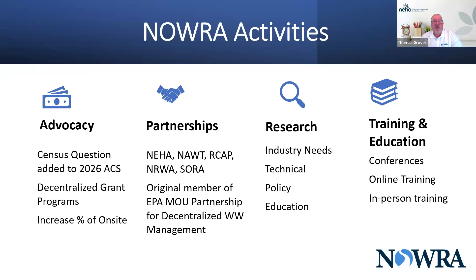Our partnerships — NEHA is one of our key partners. Our EPA-MOU partnership has about 25 or so member organizations. NEHA and NAWRA were among the original members of that partnership back in the early 2000s. We are working on research — we conducted a survey in 2021 with Baylor University on industry needs. We're finalizing that document to help identify where we have needs in policy, technical education, and align that with potential funding. And lastly, training and education is one of our biggest umbrellas.